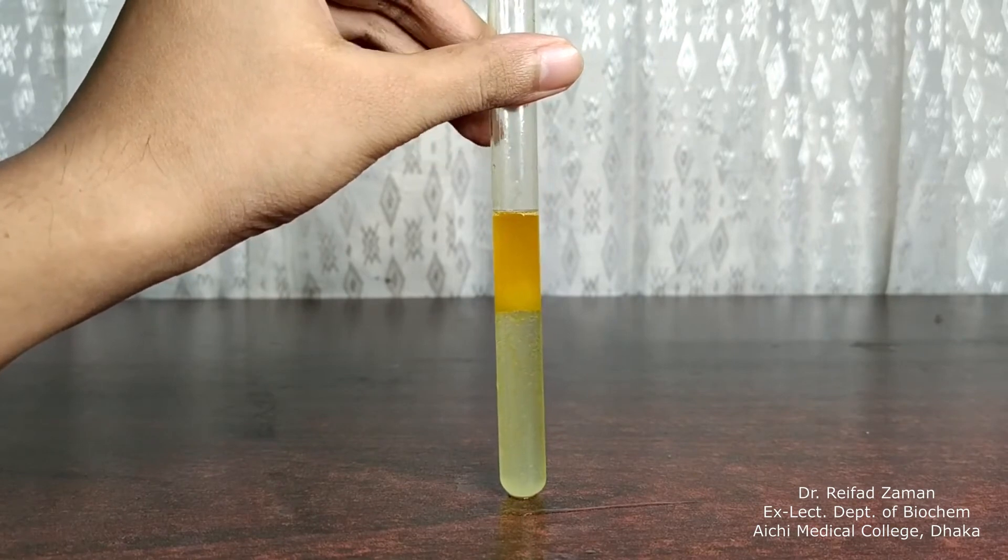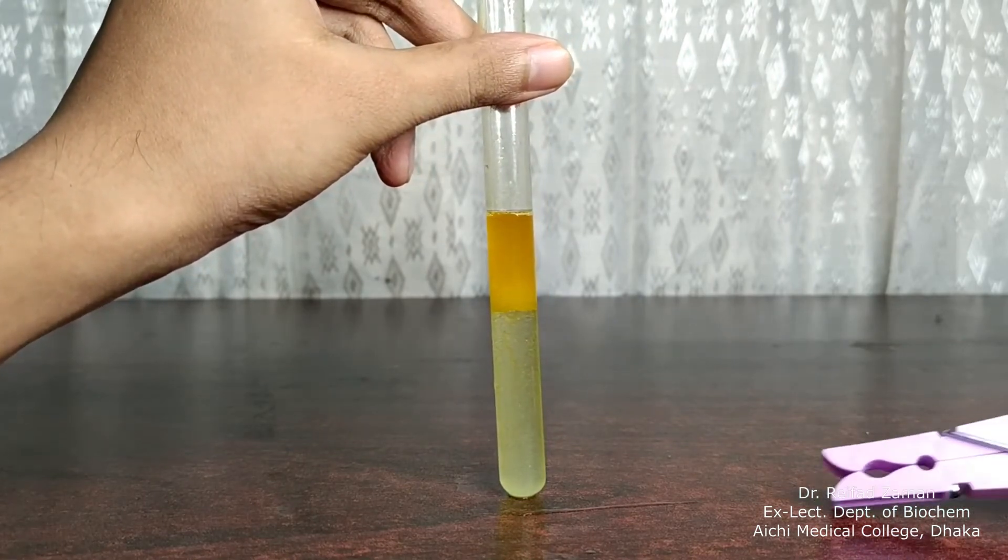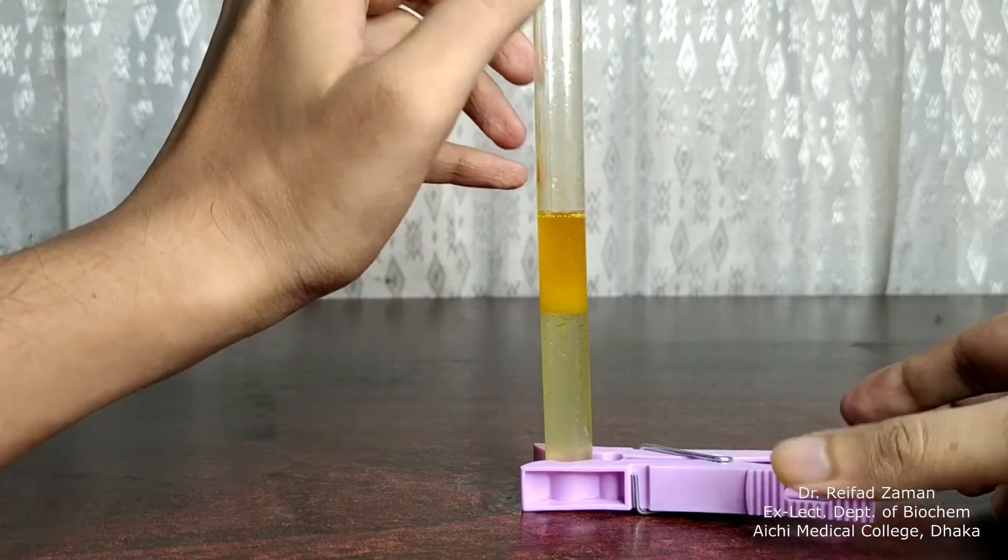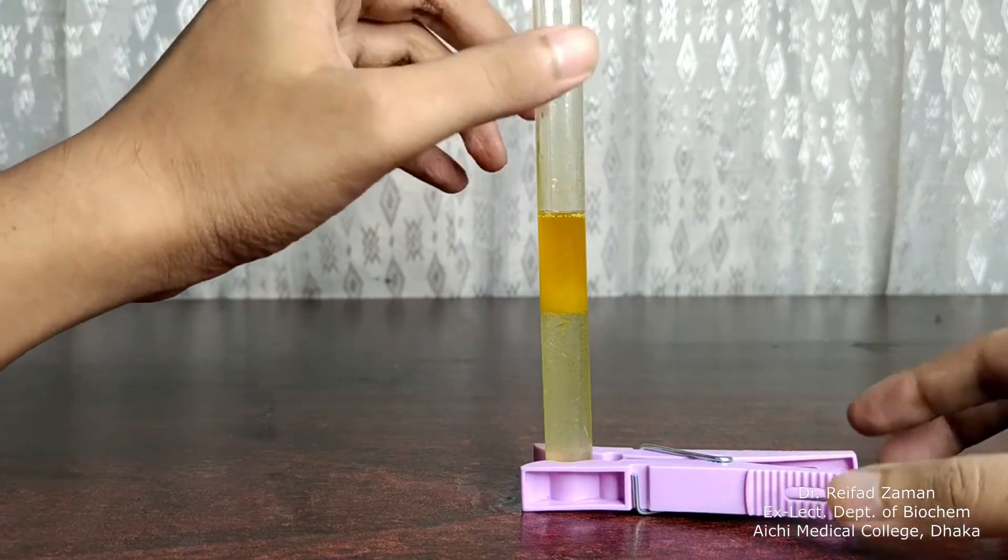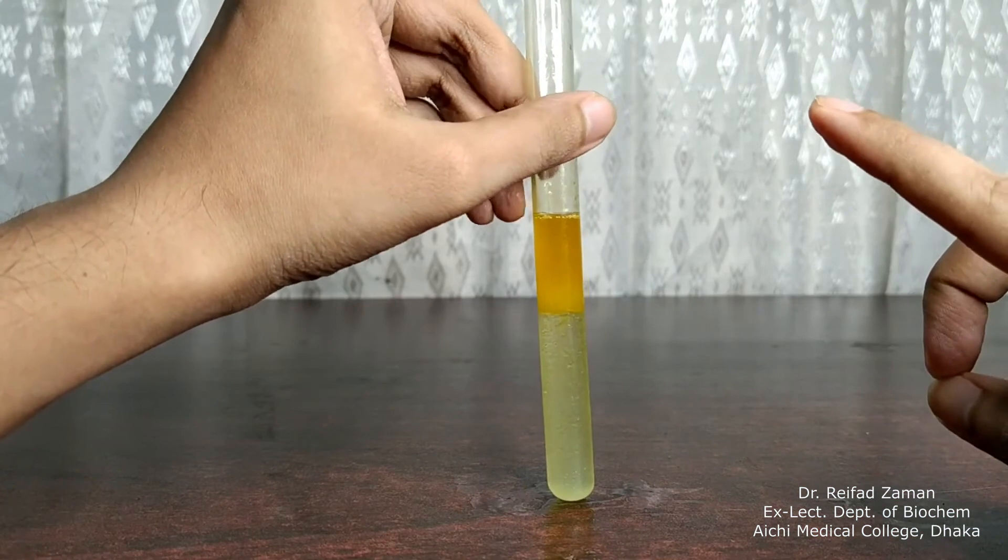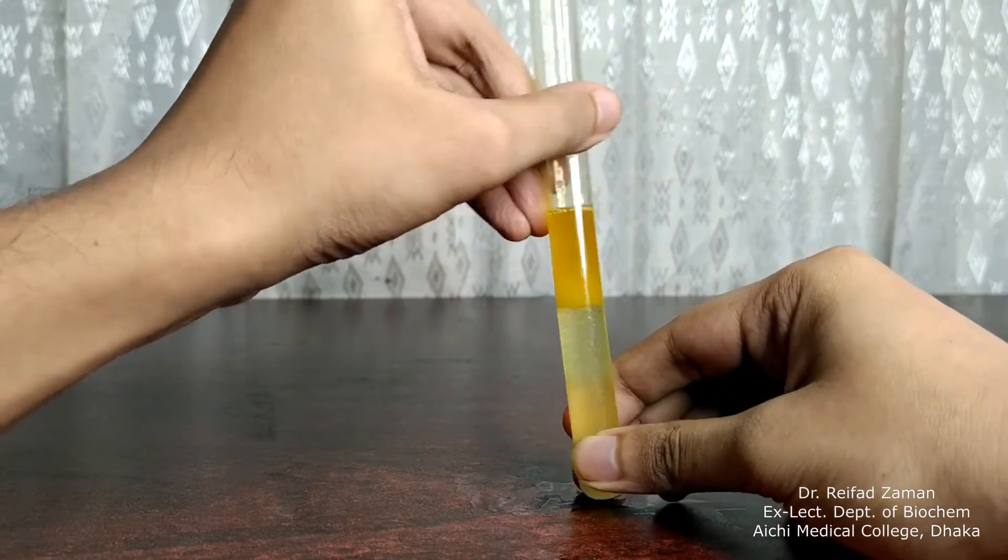In case you are wondering how I'm holding it, if I had a test tube rack at home - no, I just use this clip, like this. Simple, right? Anyways, detergent is added. Let's invert it once and see if emulsion actually takes place or not.